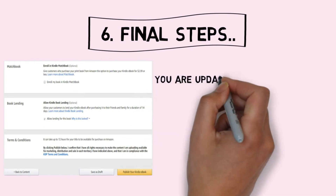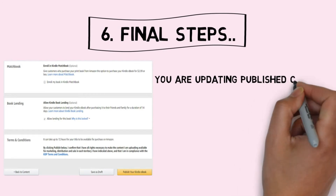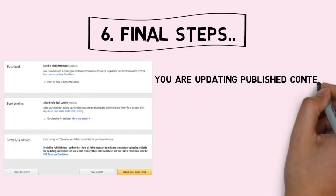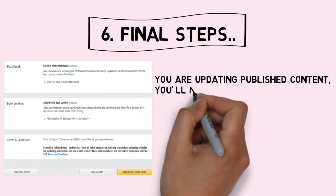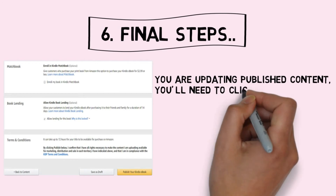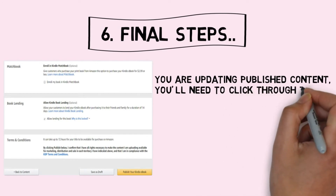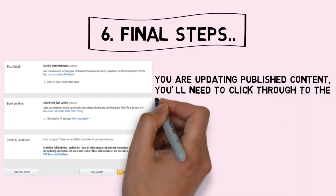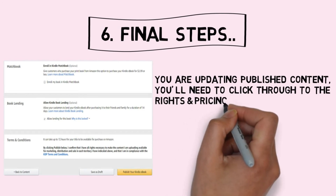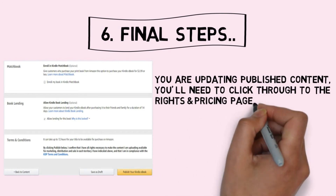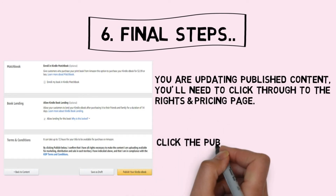Step 6 - Final Steps: You're updating published content, so you'll need to click through to the Rights and Pricing page. Click the Publish button at the bottom of this page.